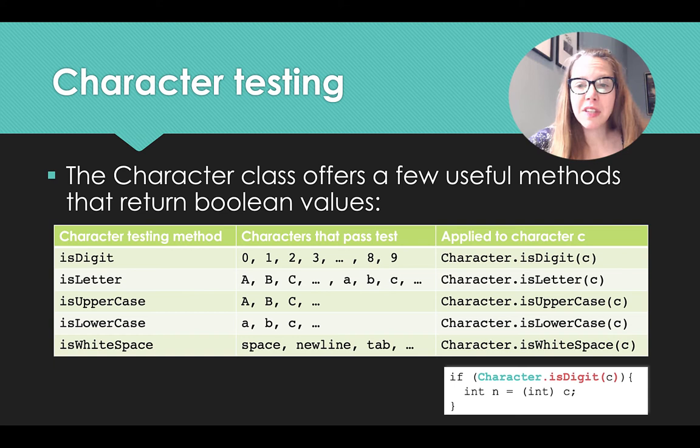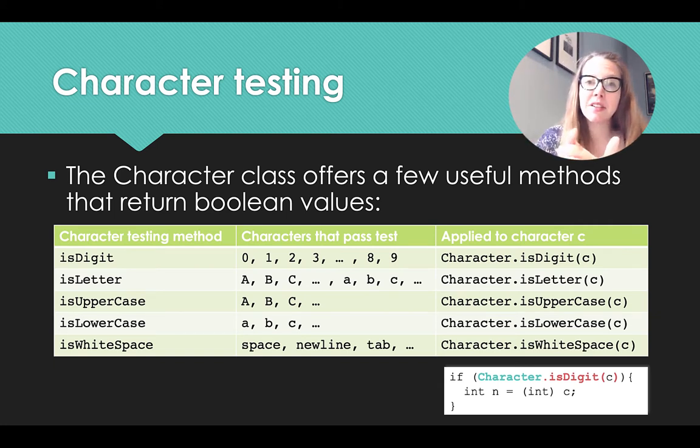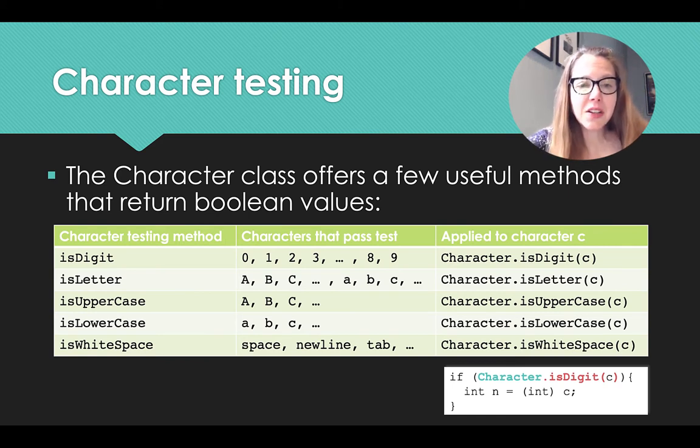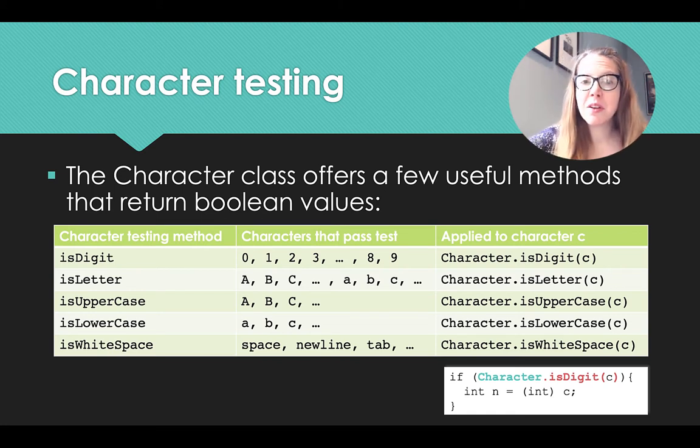So in this case, for all of these examples, if we had a character C, we could apply that method by typing character dot method name parentheses C. So for this example, on the bottom right of the screen, we can see that we're checking if the specific character is a digit. So if it's safe to cast that as an integer, if it wasn't, we would get unexpected results.